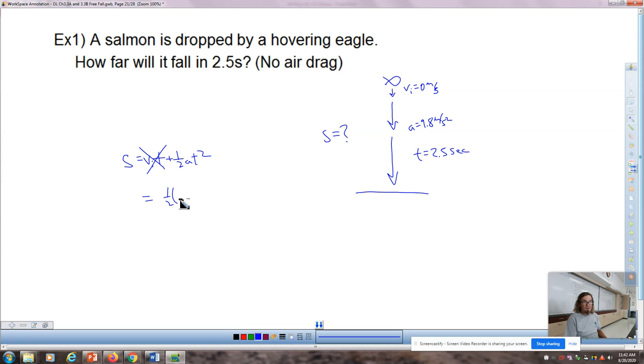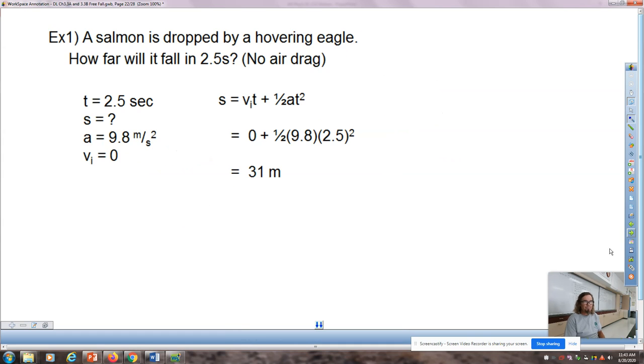If it's dropped, its initial velocity is 0 meters per second. Now, this becomes S equals VIT plus 1 half AT squared. There is no initial velocity. So, the distance equals 1 half of 9.8 times 2.5 squared. The way I do this is I always write down 9.8. But if I can look at this problem like this has been a 4, it would be 1 half of 9.8 times 4 squared. 4 squared is 16. Half of 16 is 8. So, 10 times 8 is 80. If the numbers are easy, use 10. If the numbers aren't easy and you've got to use calculator, use 9.8. 31 meters.